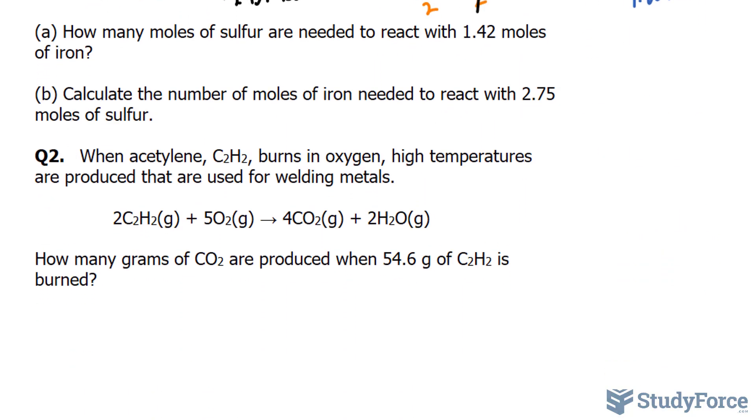Let's move on to question two. When acetylene, C2H2, burns in oxygen, high temperatures are produced that are used for welding metals. And the chemical reaction is shown underneath. How many grams of CO2 are produced when 54.6 grams of C2H2 is burned? So we're looking for the mass of CO2. And we're told the mass of C2H2, which is 54.6. Remember, the key to these questions is organization.